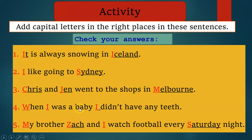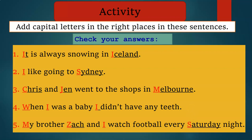'When I was a baby, I didn't have any teeth' — W in 'when' is capitalized because it begins the sentence, and I as a personal pronoun is capitalized. 'My brother Zach and I watch football every Saturday night' — M in 'my' begins the sentence, Zach is a person's name, I is a personal pronoun, and S in Saturday is the name of the day. Now I'm sure you know how to use capital letters!